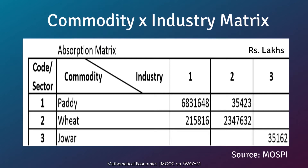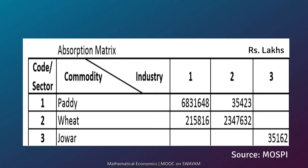you can see three commodities: paddy, wheat and joar. The numerical entries are in lakhs of rupees. The entry in the first row and first column shows that paddy worth rupees 6831648 is used as intermediate input in the paddy industry. The entry in the first row and second column shows paddy worth rupees 35423 is used as intermediate input in the wheat industry. The sum of the entries along any row shows the total of inter-industry and final use of the commodity.